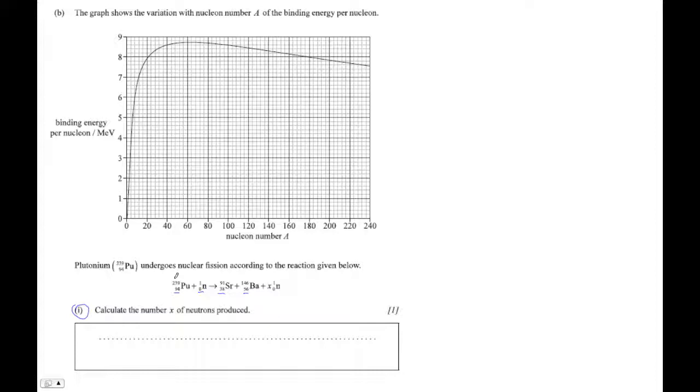But then the top number also has to add up. So this is going to be 239 plus 1 has to equal 91 plus 146 plus x, basically. Okay, so set up that equation, solve for x.